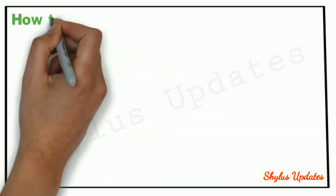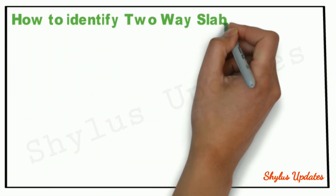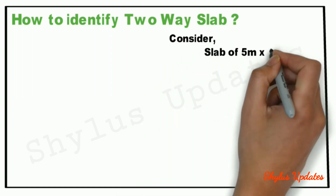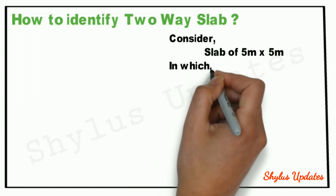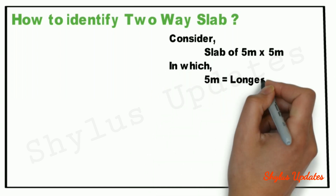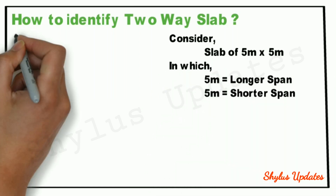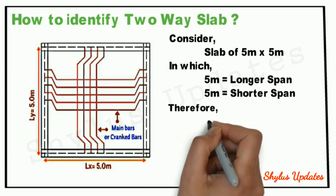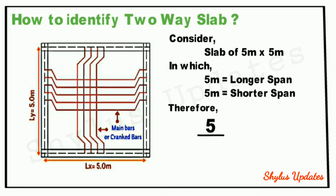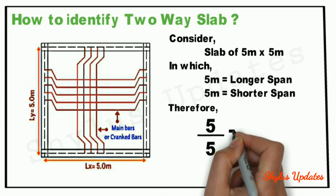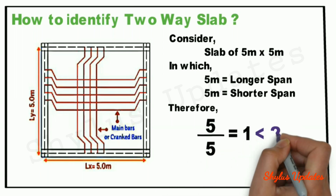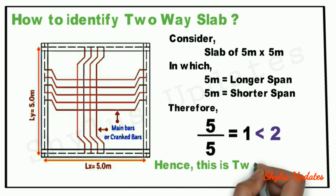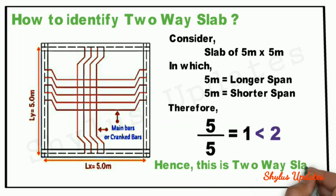How to identify a 2-way slab? Consider a slab of 5 meter by 5 meter, in which 5 meter is both the longer span and the shorter span. You can refer this diagram — LY is equal to 5 meter and LX is equal to 5 meter. Therefore, 5 divided by 5 is equal to 1, which is less than 2. Hence, we can conclude that this slab is a 2-way slab.